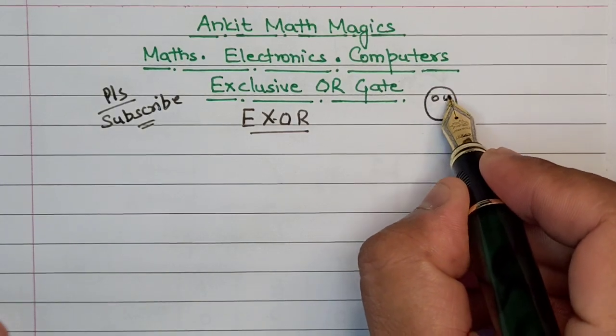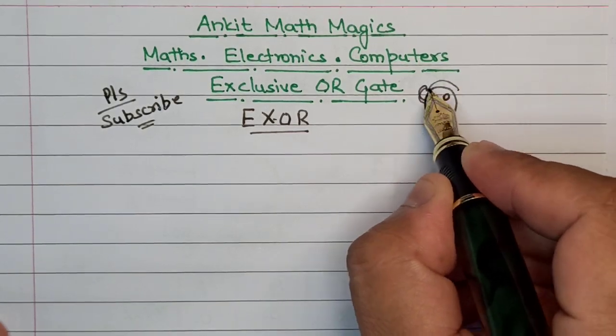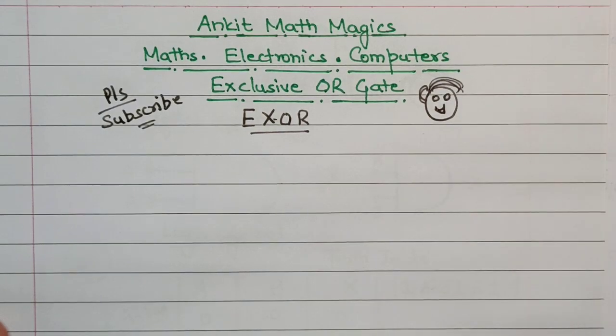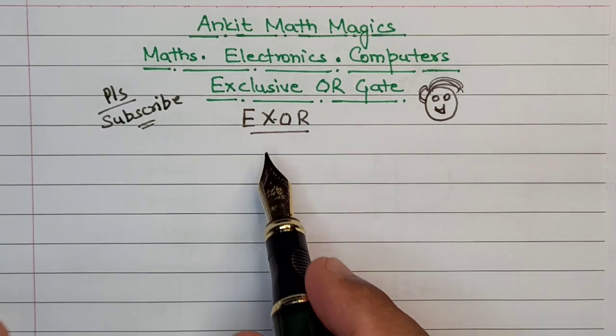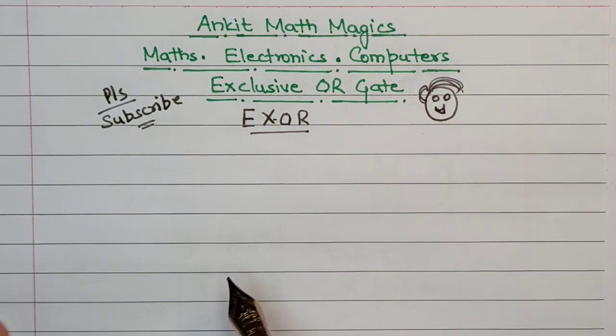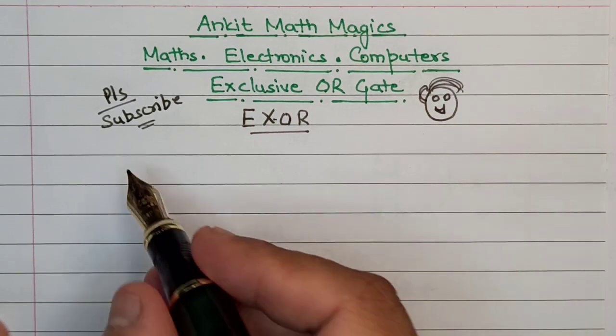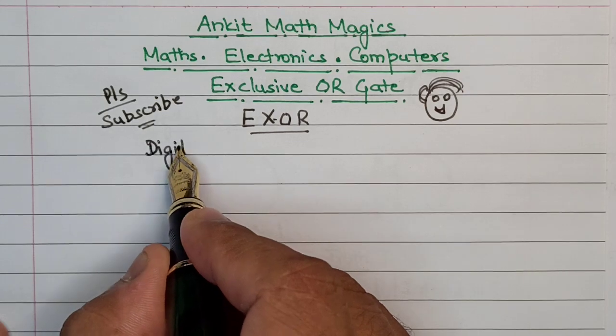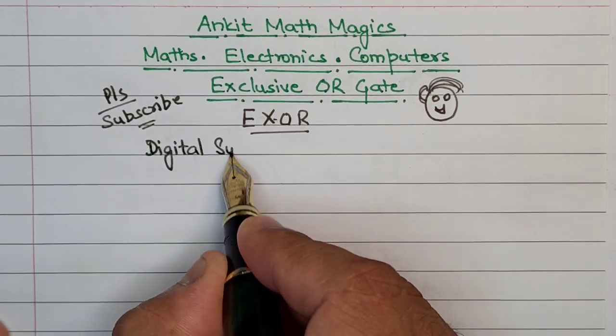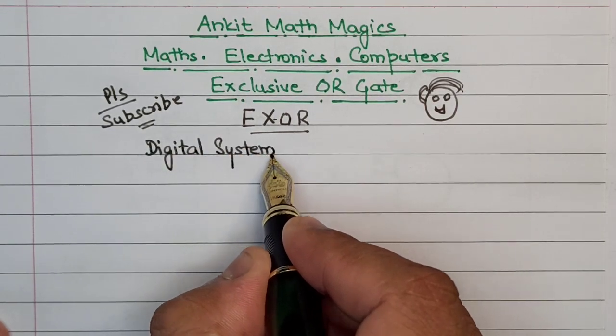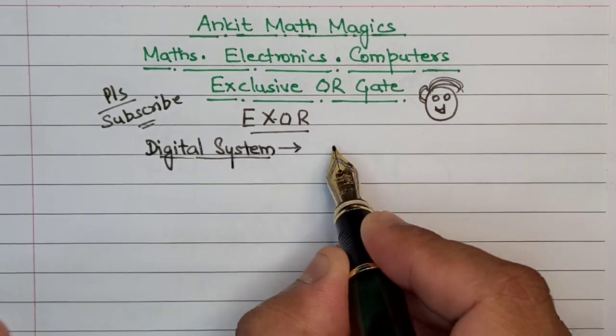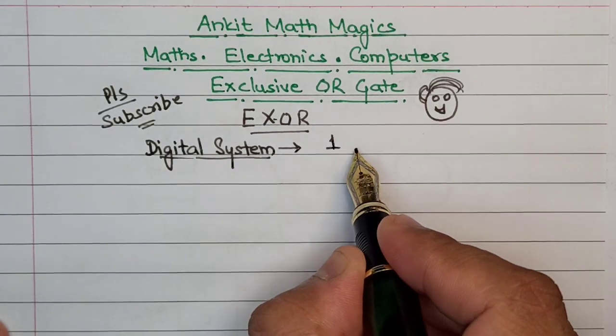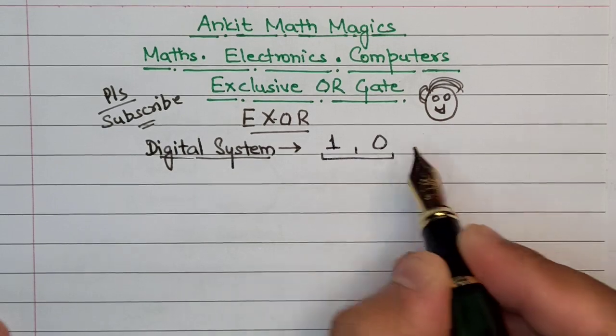So let's start with a big smile on the face. Here we have the case of the Exclusive OR, also known as the XOR gate. Digital electronics or digital systems operate on just two digits: 1 and 0, known as the binary digits.